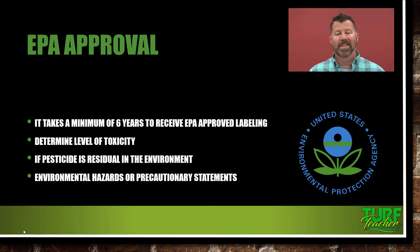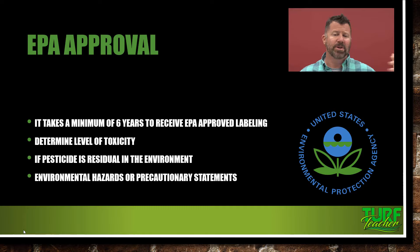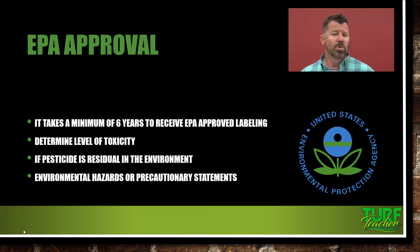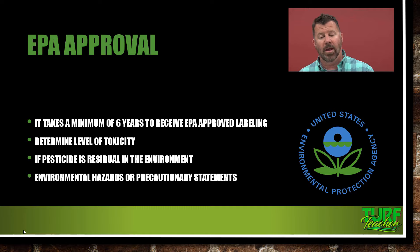EPA approval — the Environmental Protection Agency. It takes a minimum of six years for the EPA to approve a pesticide. During those six years, they're going to determine the level of toxicity, see if the pesticide has any residual activity in the environment, and determine what hazards or precautionary statements must be added to the pesticide. If you're a chemist in a lab and you come up with a new chemical, it's going to take you six years minimum before you can even get it on the shelf to sell to people.